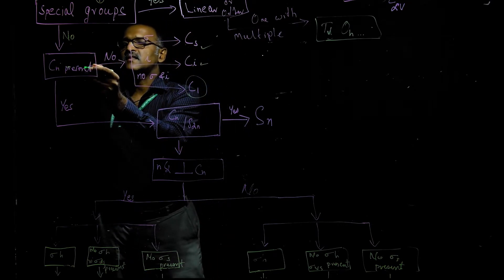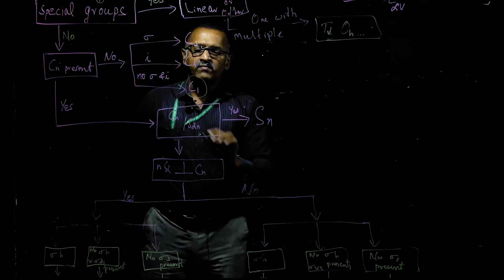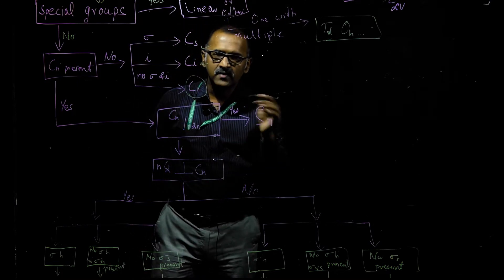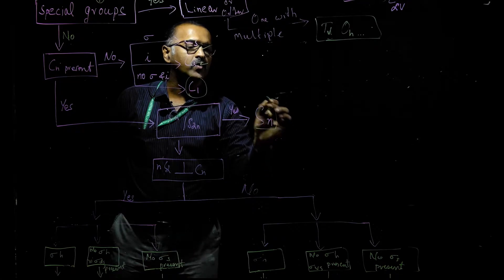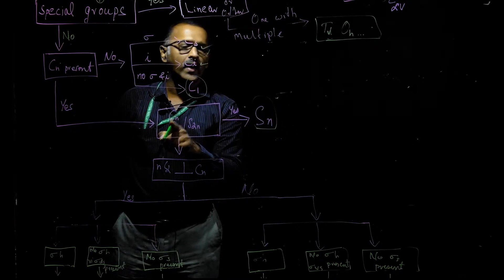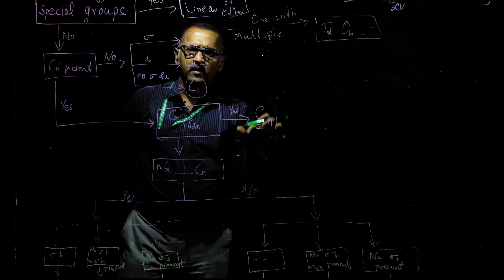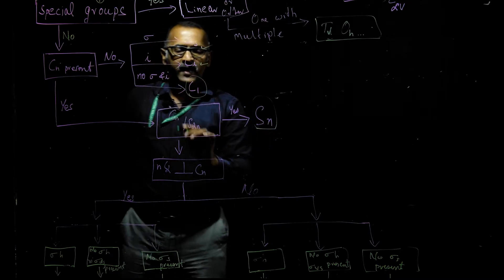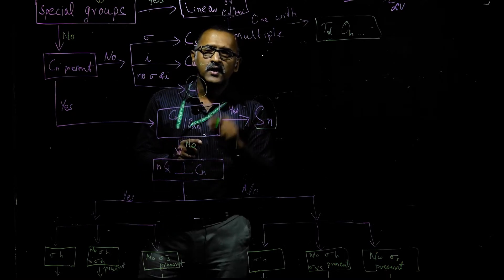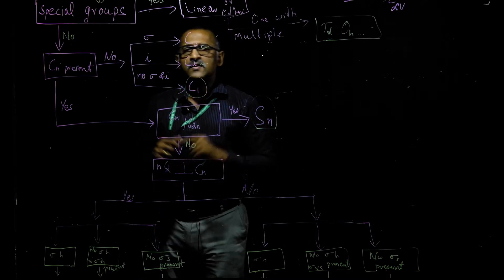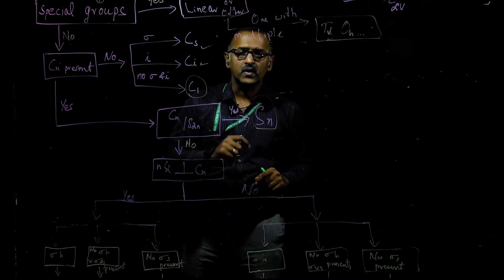If the answer is yes and a Cn axis is present, the next question is whether Cn is a special case of S2n — that is, whether it is an improper rotation-reflection axis. If yes, we can directly assign the point group as Sn. For example, if the axis is C2, it may be called S2. The S2 point group is very rare, with very limited molecules. If the answer is no, we then check whether there are other C2 axes perpendicular to the principal Cn axis.